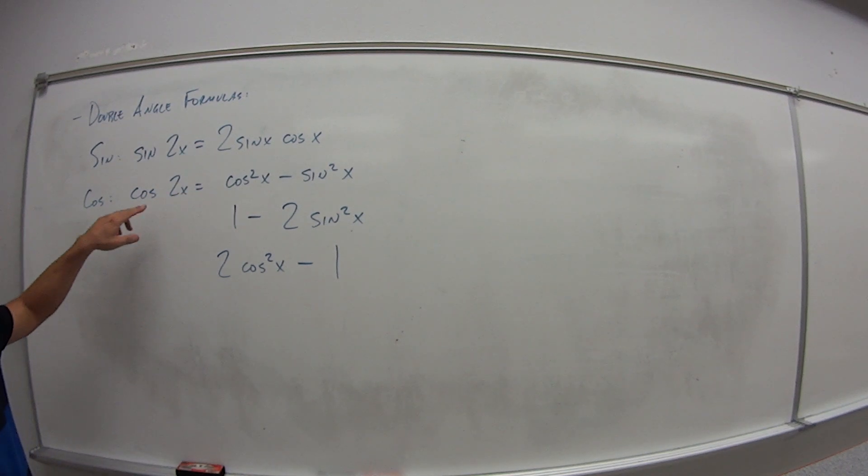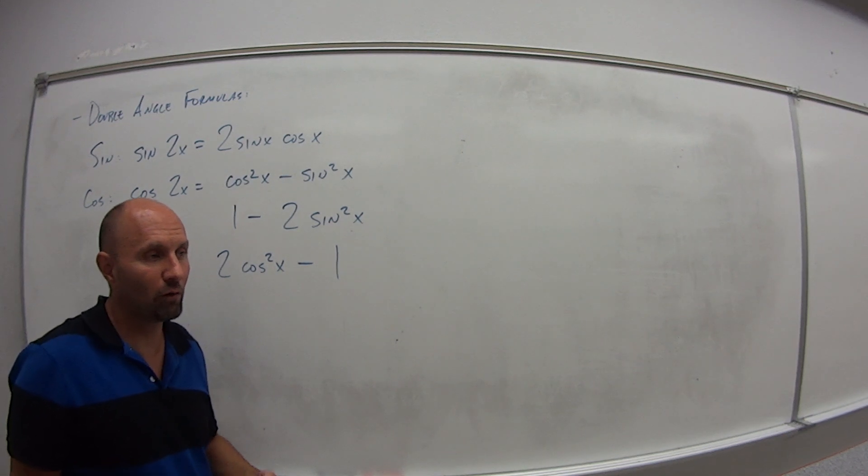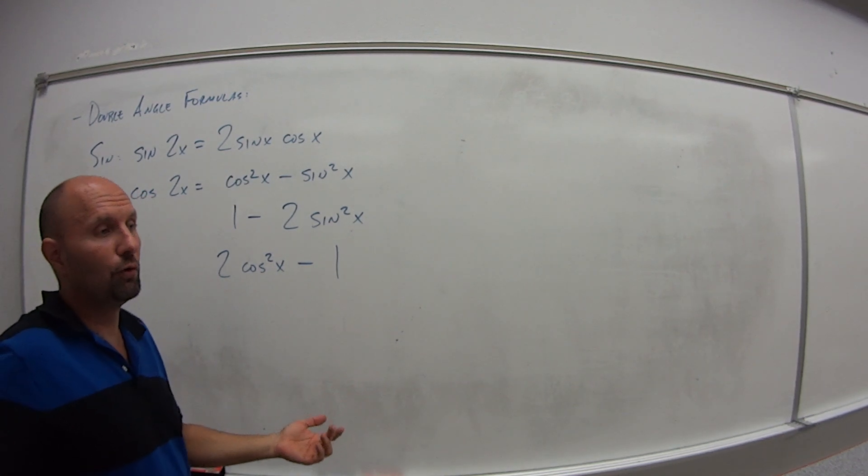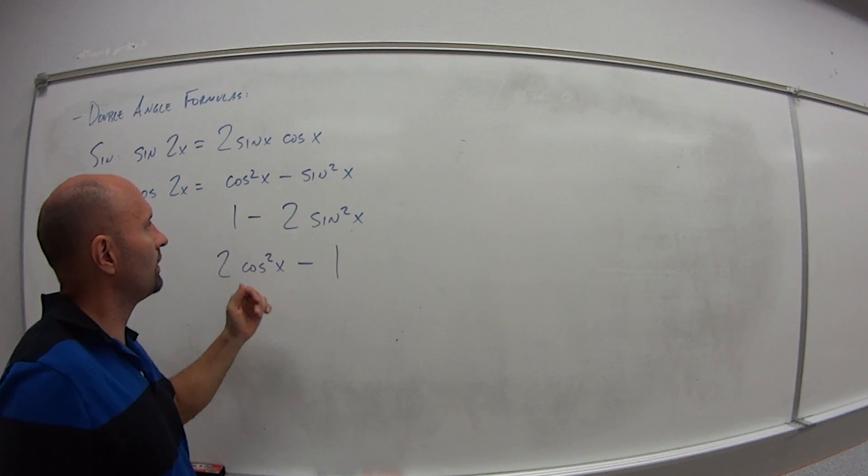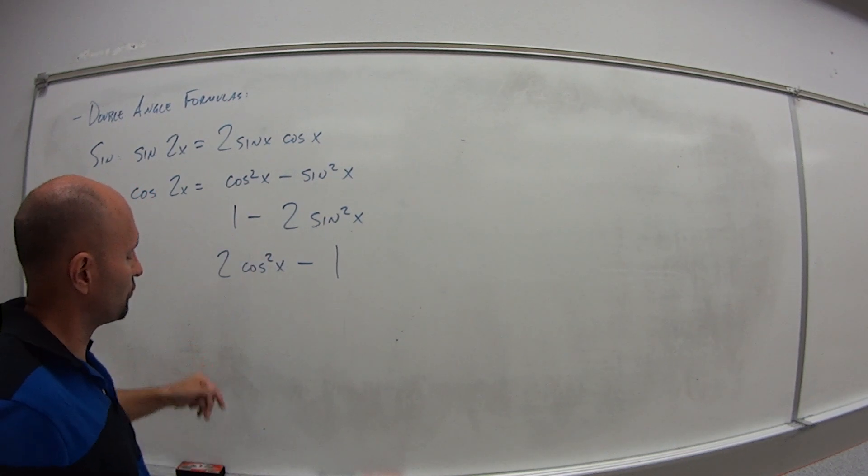It could also be 1 minus 2 sine squared x or 2 cosine squared x minus 1. These are three different ways to get the value for cosine of 2x. Depending on what information you're given in the problem or if this shows up in a proof, whichever one is the easiest for you to use, that's which one you would want to choose.